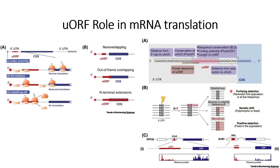This G-to-T mutation can lead to three conditions. First, it can be deleterious or detrimental to the population, in which case it will be removed from the population or exist at a lower frequency. Second, if the mutation is neutral, it will become fixed in the population over continuous generations. Third, if the mutation is beneficial, it will increase in frequency with each generation.